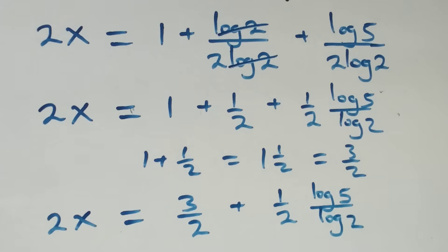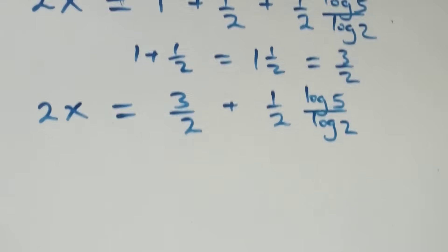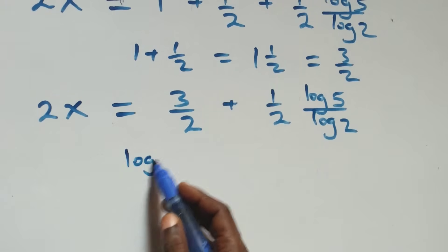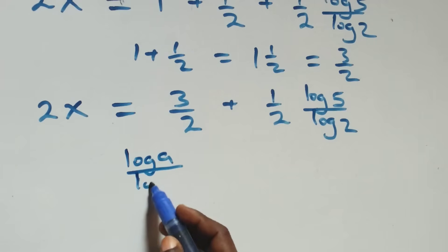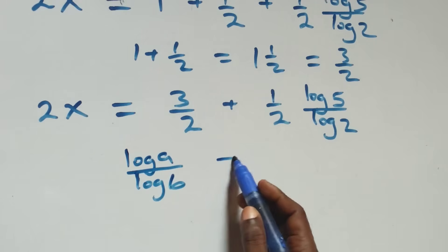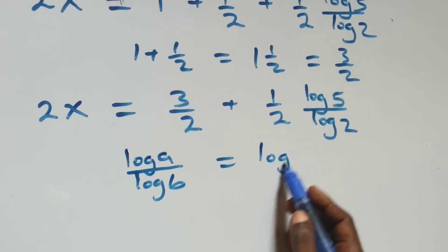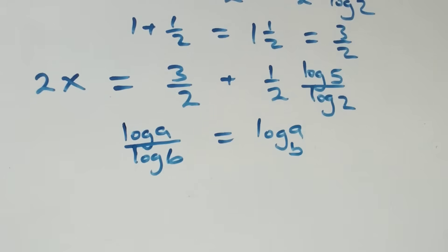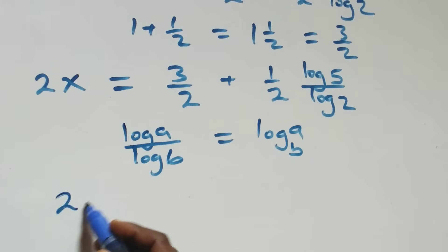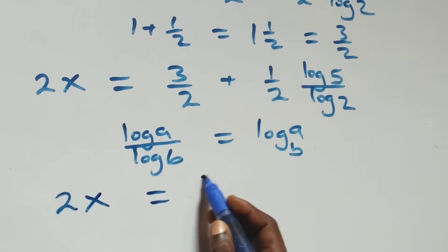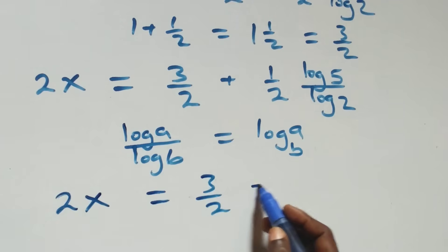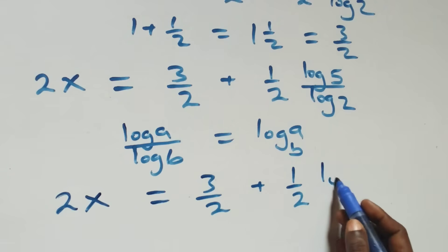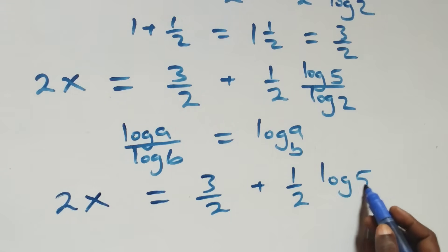The next step: we apply the change of base formula, where log a over log b is the same as log a to base b. Then what we have here becomes 2x equals to 3 over 2 plus 1 over 2 times log 5 base 2.